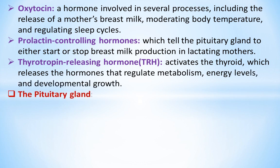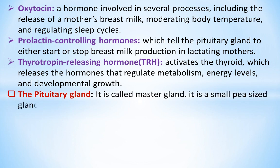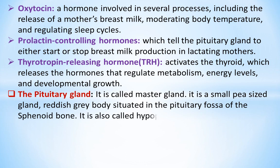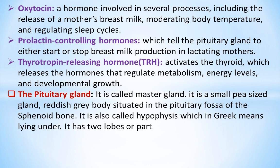The pituitary gland is called the master gland. It is a small pea-sized, reddish-gray body situated in the pituitary fossa of the sphenoid bone. It is also called the hypophysis, which in Greek means 'lying under.' It has two lobes or parts: the front part (anterior) and the back part (posterior).